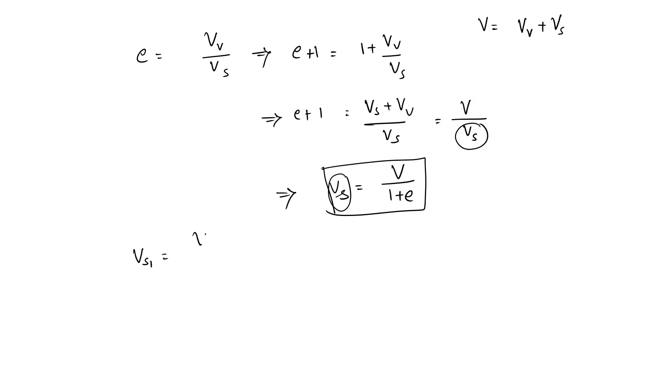Now, Vs1 is V1 by 1 plus E1. Vs2 is V2 by 1 plus E2. Does volume of solids change? It does not change. So what can we write? Because Vs1 equal to Vs2 always, right? Vs1 equal to Vs2, that is the reason why I can write this.